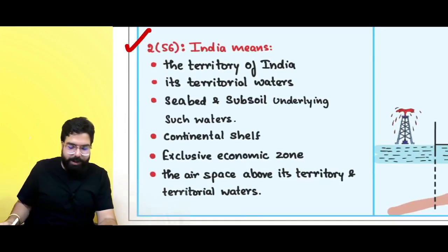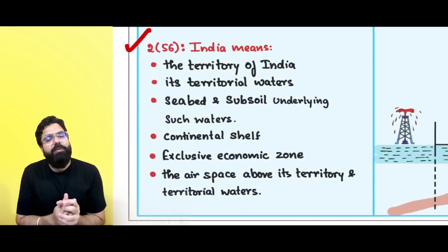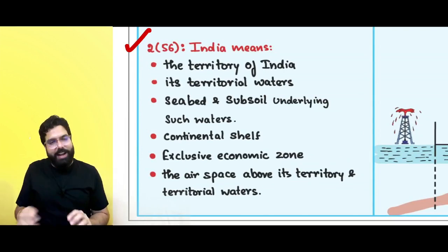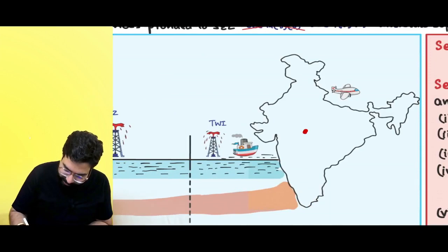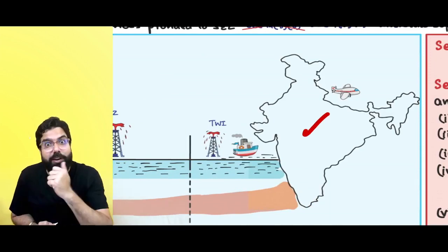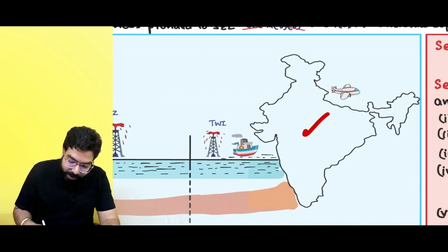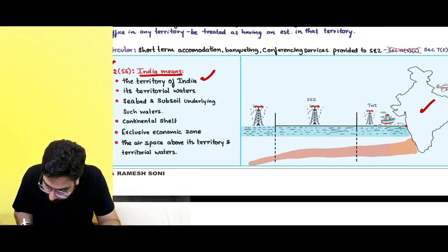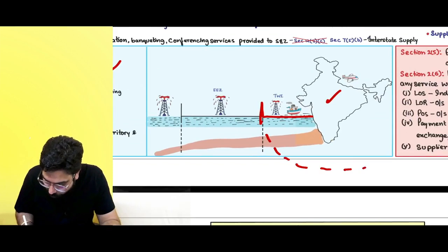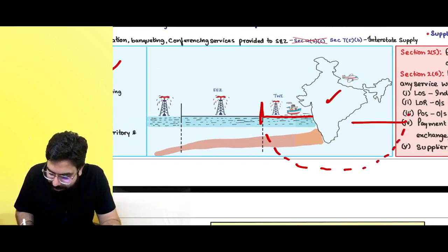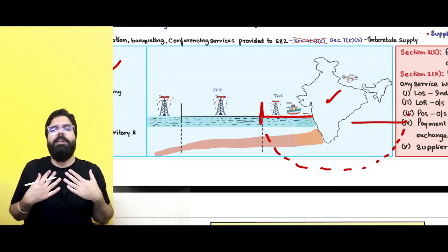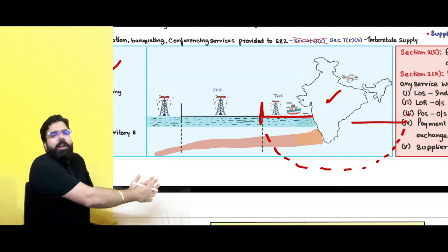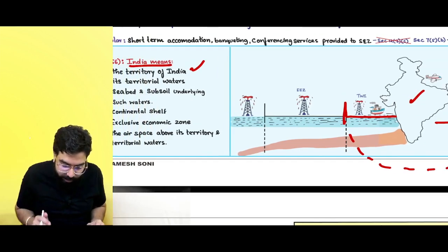Section 2(56) talks about the definition of India. India means the territory of India — all the states and union territories. This is basically India. Additionally, territorial waters up to 12 nautical miles from the baseline are also India. So India means the territory of India plus up to 12 nautical miles of territorial water.